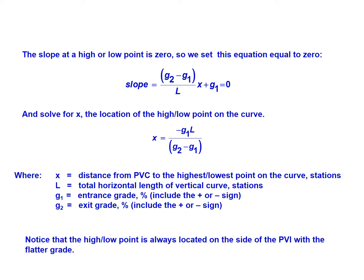And one thing we'll notice as we work through example problems is the high or low point is always located on the side of the PVI with the flatter grade. So if you look at the curve in totality and you see which side of the PVI has a flatter grade, that's the side you'll see the high or low point. So that can be a useful check. If you have your drawing and figure out where your high or low point is, that can be another check for you to make sure you've got the correct solution.